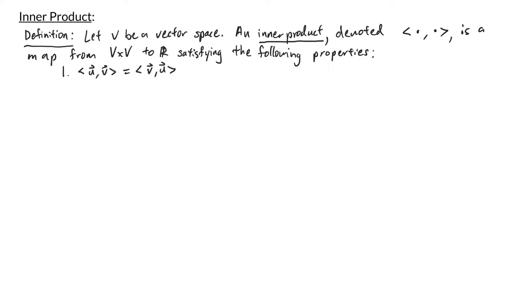First is that the inner product is commutative, meaning if I take the inner product of u and v, that's the same as the inner product of v and u. Notice that we denote the inner product of two vectors by putting them within angle brackets.